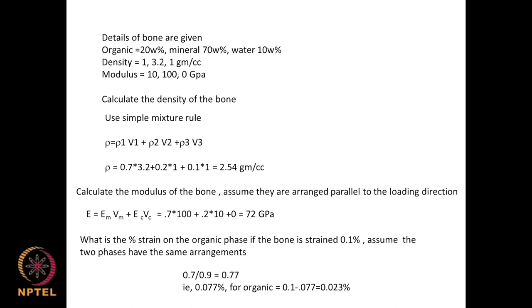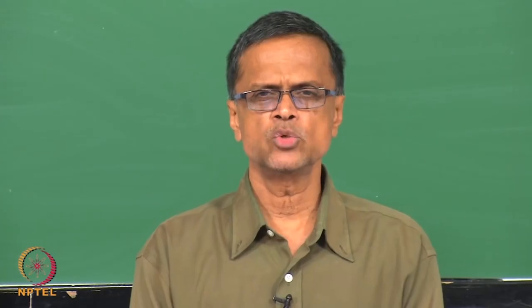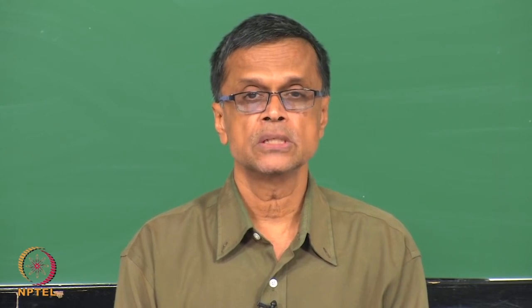Now let us go to composites. Composites are almost like blends. We can make composites of two polymers, or a polymer and an inorganic material like glass (glass-reinforced polymer), fiber-reinforced polymer, carbon-reinforced polymer, two metals combined, or a ceramic and metal combined together to form a composite.